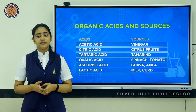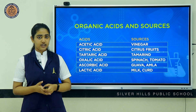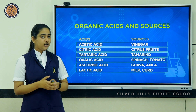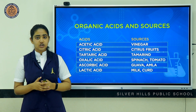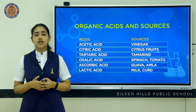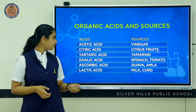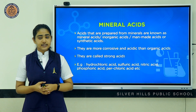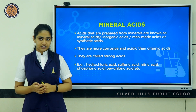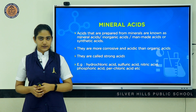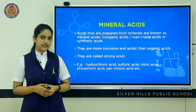Let us look at some common organic acids and their sources: acetic acid in vinegar, citric acid in citrus fruits, tartaric acid in tamarind, oxalic acid in spinach and tomatoes, ascorbic acid in guava and amla, and lactic acid in milk and curd. Moving on to mineral acids — mineral acids are prepared from minerals. They are known by different names: mineral acids, inorganic acids, manmade acids, or synthetic acids.